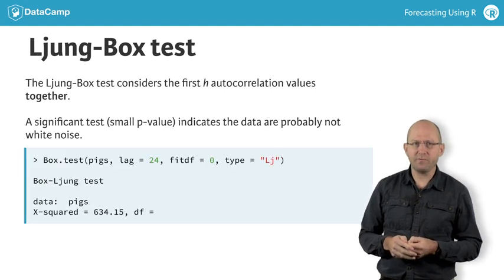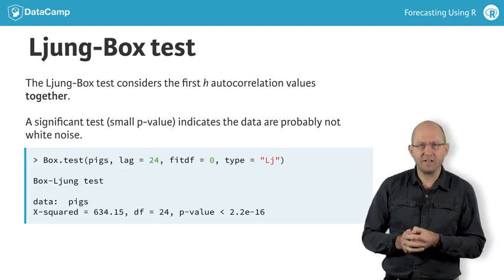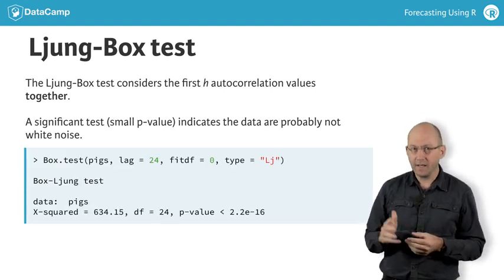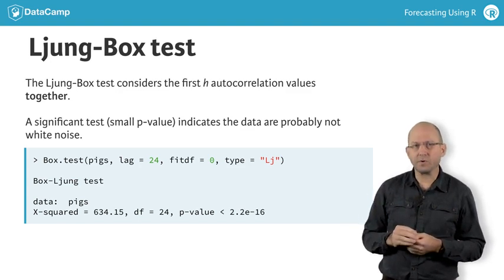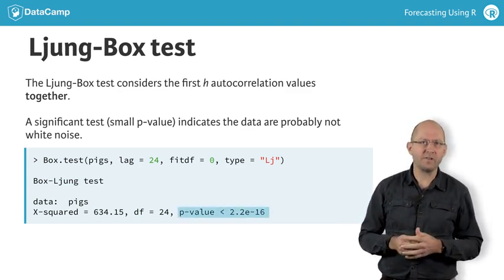You can apply it to the first 24 autocorrelations you saw in the ACF plot for the pigs dataset. Here, the p-value is very small, again suggesting that this is not a white noise series.